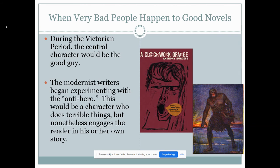We also have to consider that sometimes we're going to have antiheroes. During the Victorian period, just before the modernist era, we had narrators who were central characters and were unequivocally the good guy — the protagonist meant good. The modernist writers began experimenting with the antihero: a character who is the main character, does terrible things, but nonetheless engages with the reader in his or her own story. We are always looking for characters who we might in some way relate to, even though they do terrible things. The antihero is very common today, but it was a modernist phenomenon — something that didn't happen before this time period.